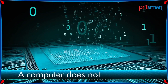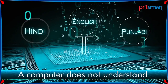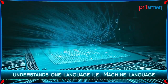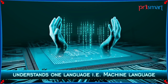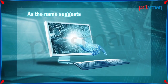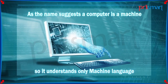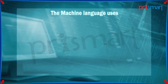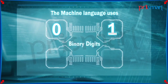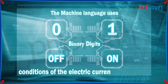A computer does not understand Hindi, English or Punjabi. It only understands one language, that is, machine language. As the name suggests, a computer is a machine, so it understands only machine language. The machine language uses 0 and 1, the binary digits, which means off and on conditions of the electric current respectively.